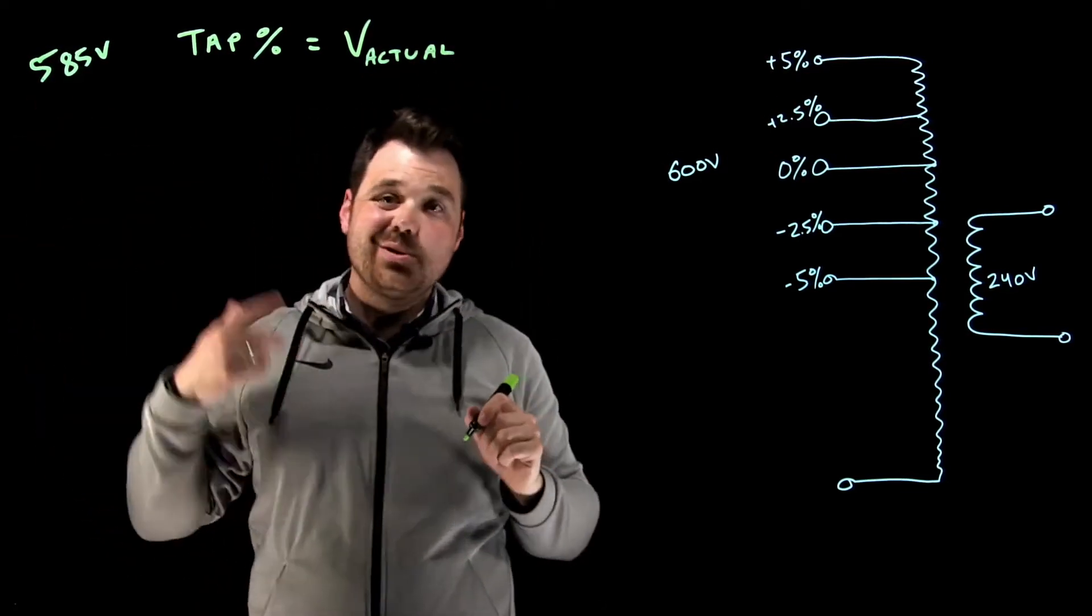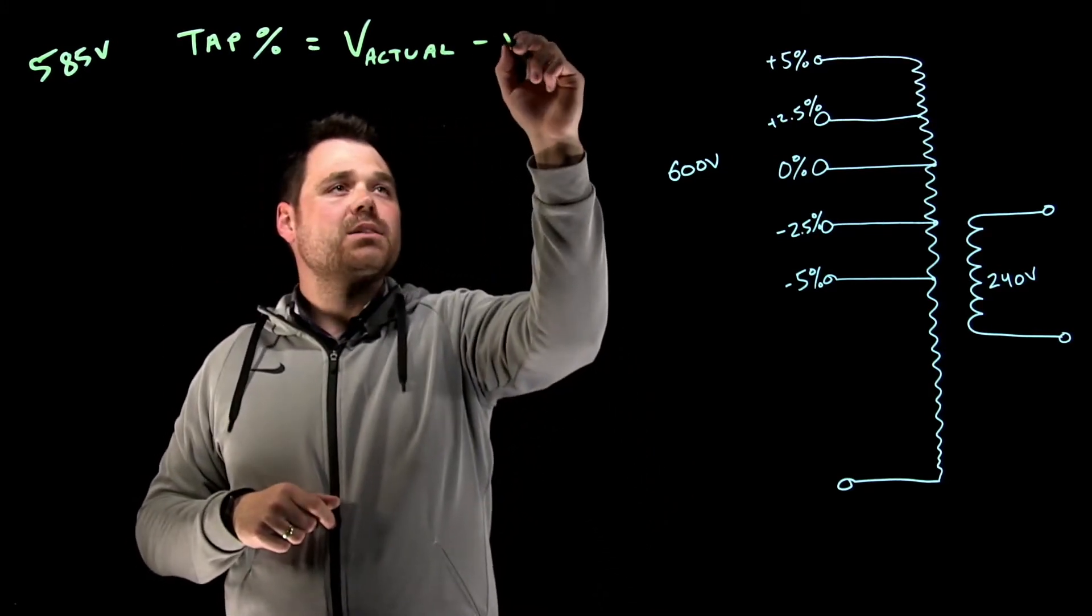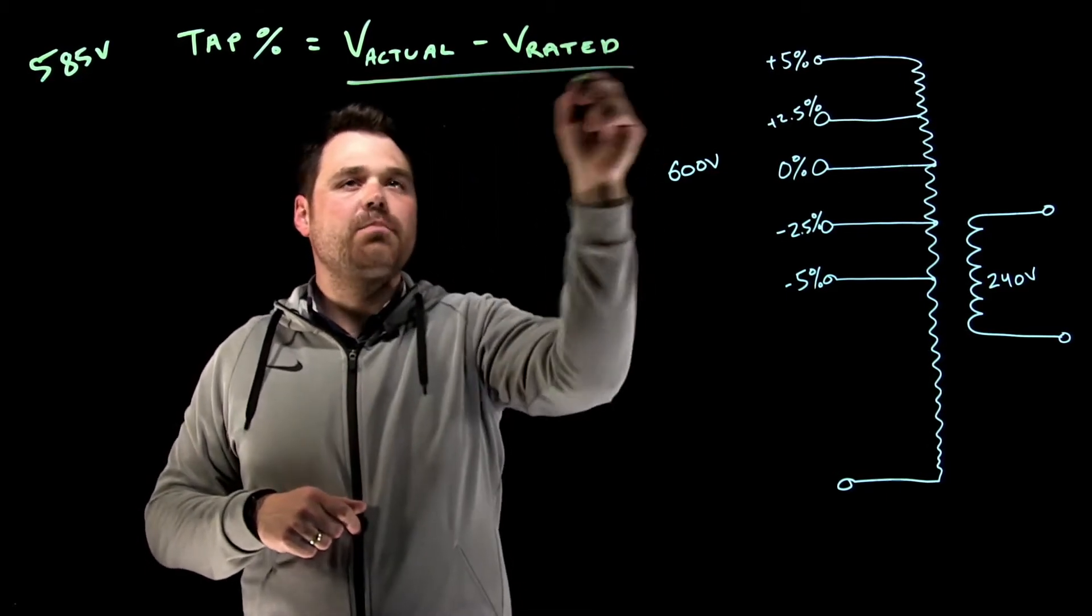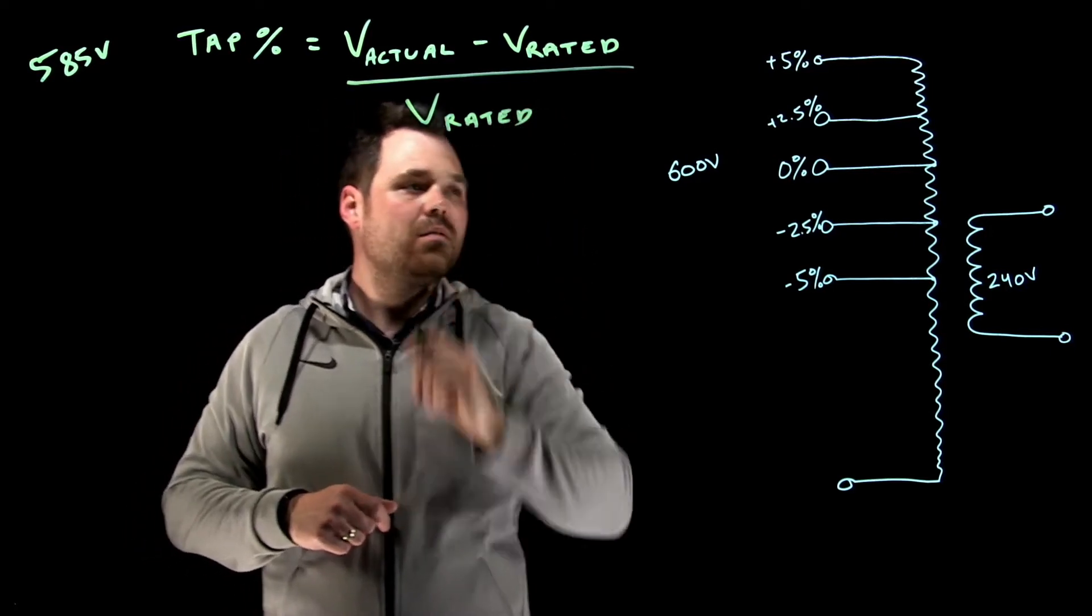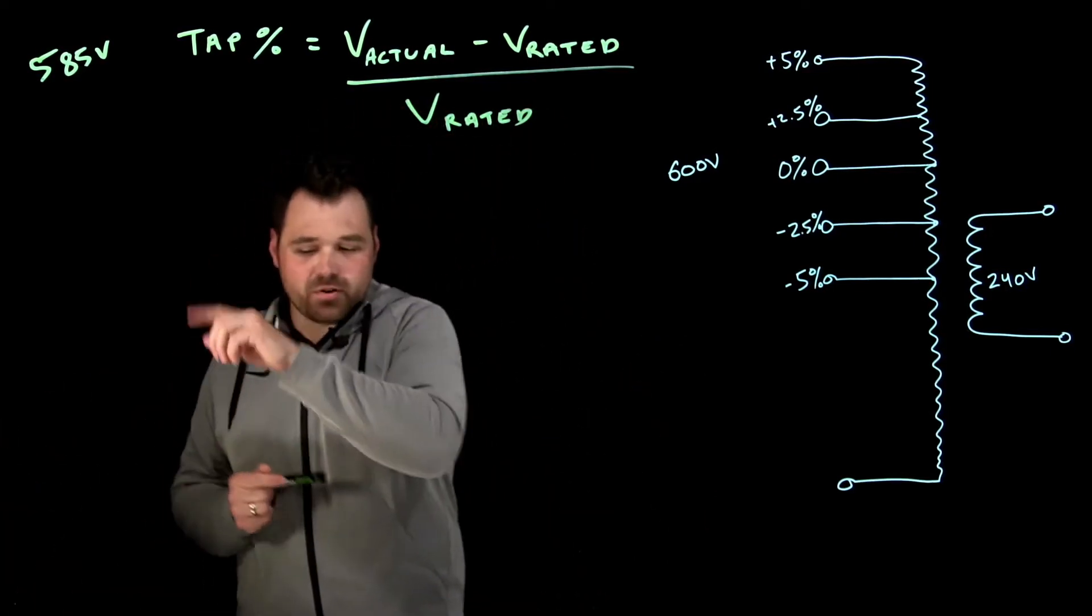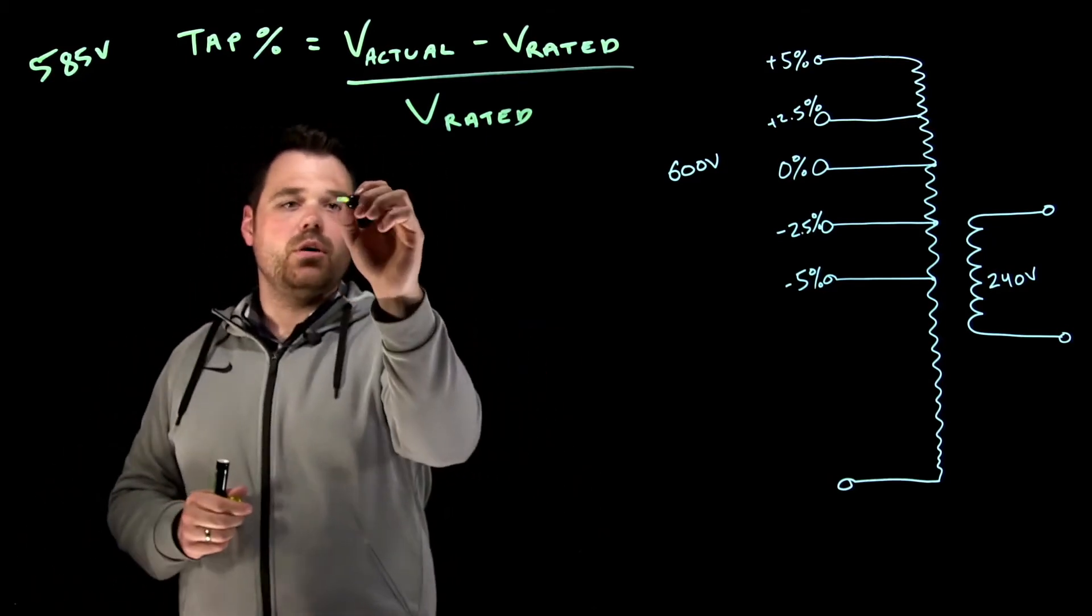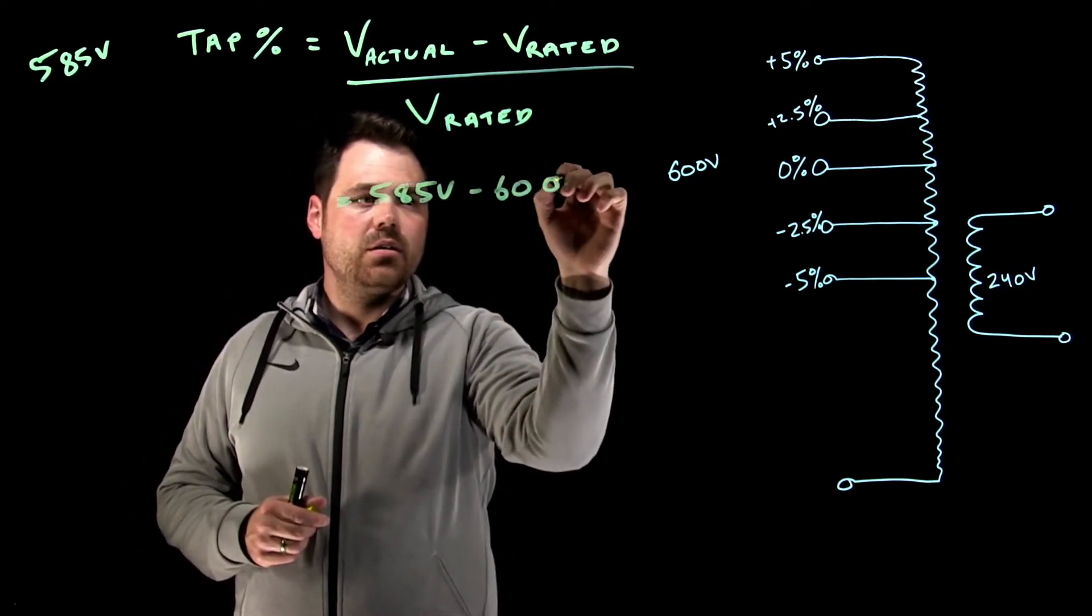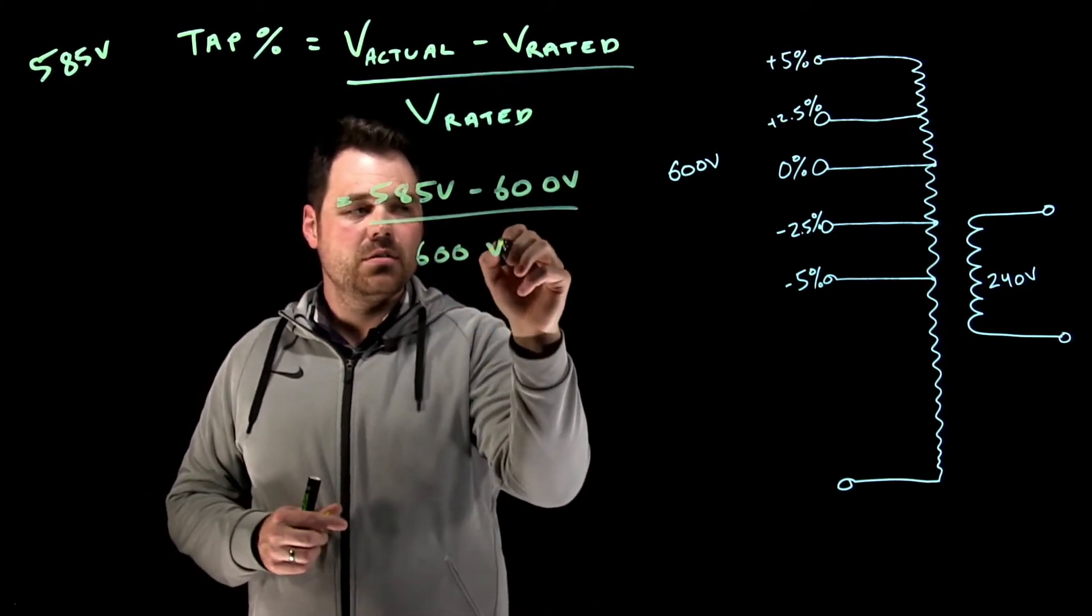In this case, we're doing 585 volts. That's our first example, minus the rated voltage divided by the rated voltage. So for 585, what I'm going to do for my first example there, I'm going to go 585 volts minus 600 volts divided by 600 volts.